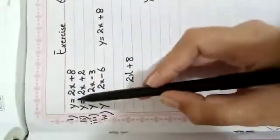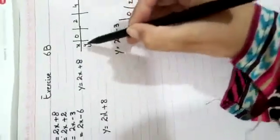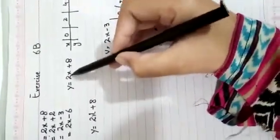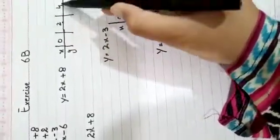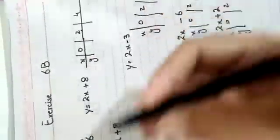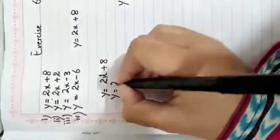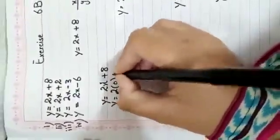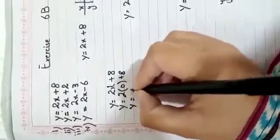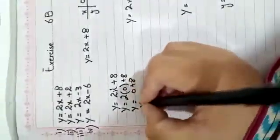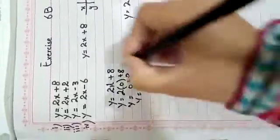First function is y equals two x plus eight. We will find y values while x will be zero, then two, then four. First when x is zero: y equals two into zero plus eight, y equals zero plus eight, it means y is eight.